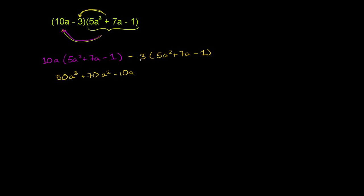Then we distribute this negative 3 times all of this. Negative 3 times 5a squared is negative 15a squared. Negative 3 times 7a is negative 21a. Negative 3 times negative 1 is positive 3.